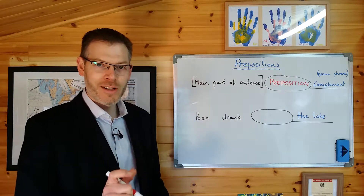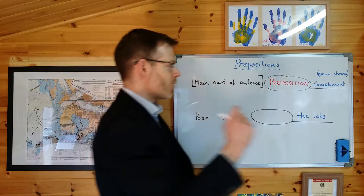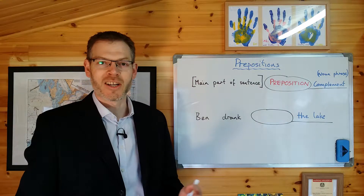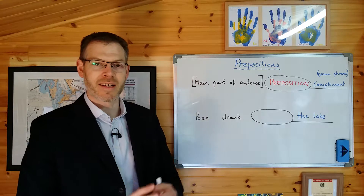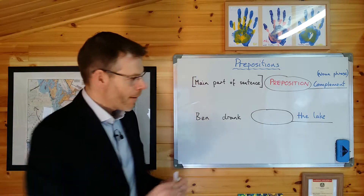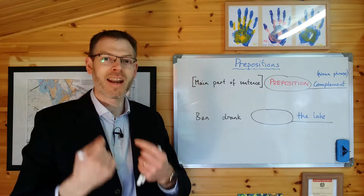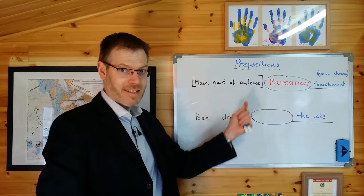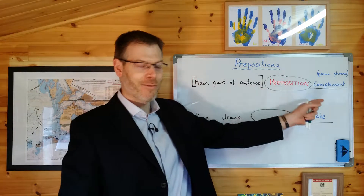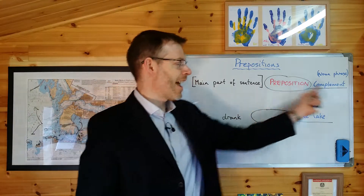A preposition is a word or a group of words which joins the main part of a sentence to a noun phrase. The noun phrase might be a noun, or it might be a group of words which together function as a noun. The preposition, and here's the key point, because the preposition joins that noun phrase to the main part of the sentence, it then expresses the relationship between the main part of the sentence and that noun phrase. So, a preposition joins a noun or a noun phrase to the main part of a sentence, and as such, it expresses the relationship between the main part of the sentence and that noun phrase.